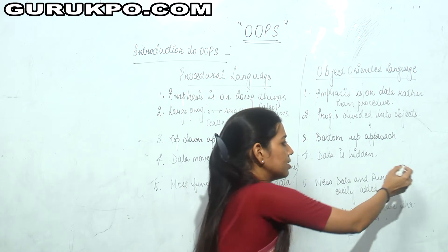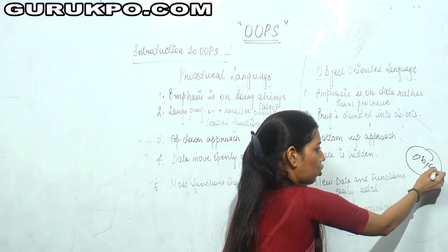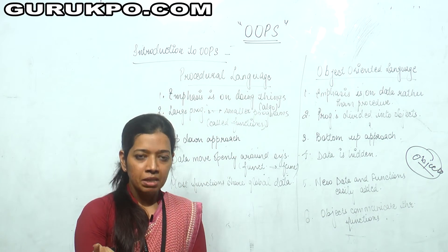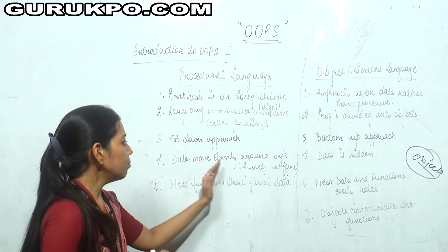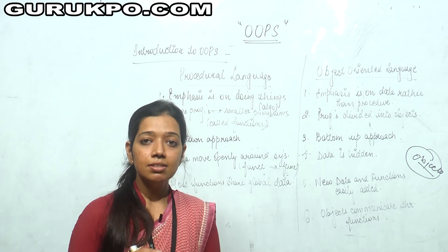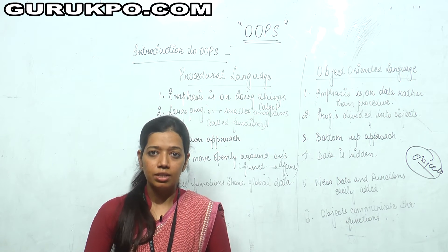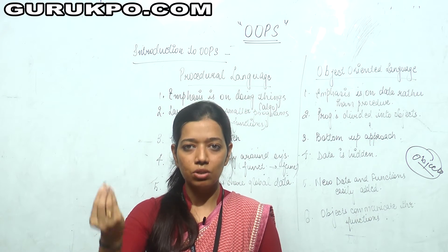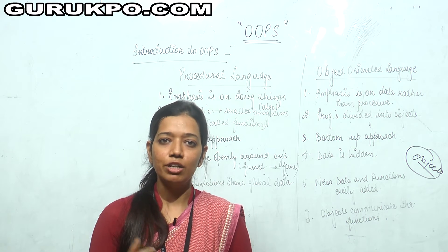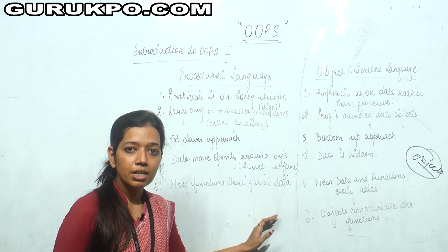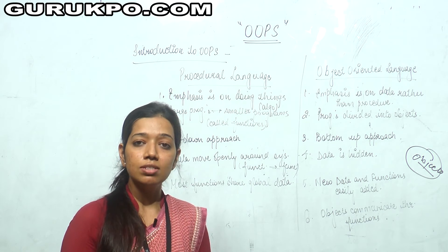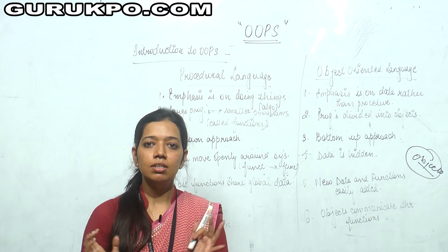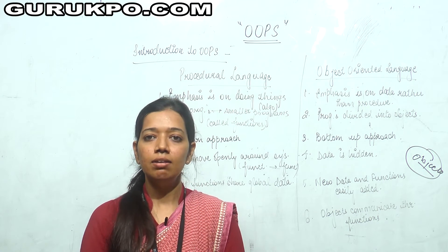In the bottom-up approach, firstly we operate on the objects — what are the objects of the program — and then we focus on what we are calling upon. Next, in procedure-oriented language, data moves openly around the system because the data used in functions are mostly global data — declared in the main method or above it through global declaration — and then used in our functions. But in object-oriented language, there is a concept of data hiding that we will learn about in further lectures, where the entire data is built around the functions and methods being used.